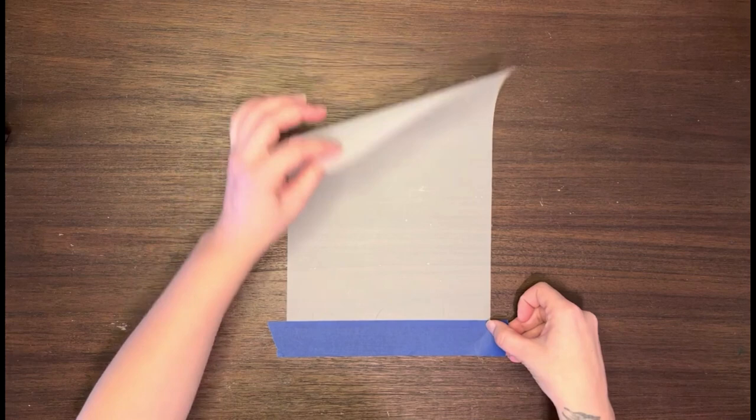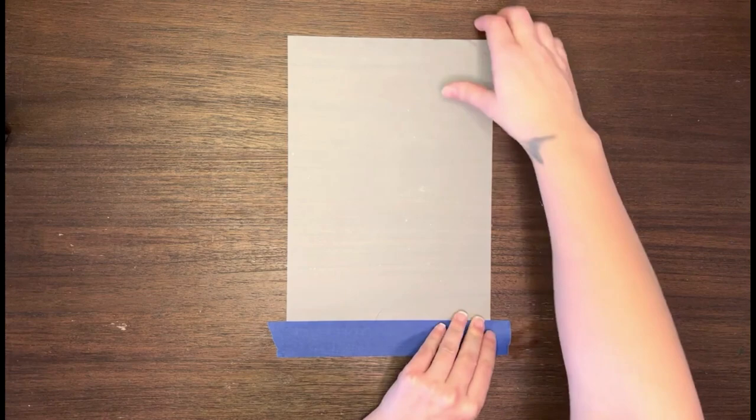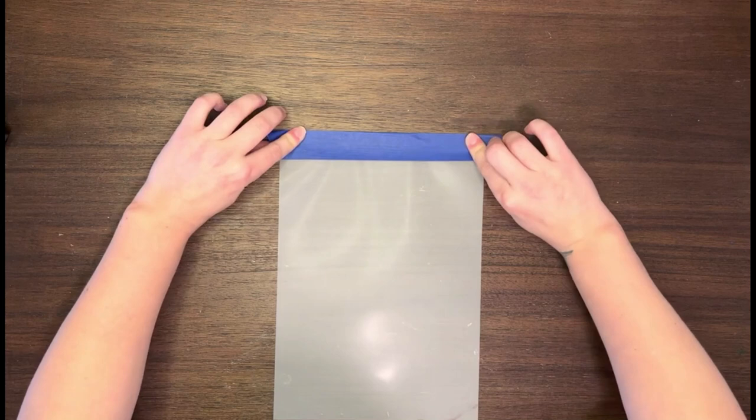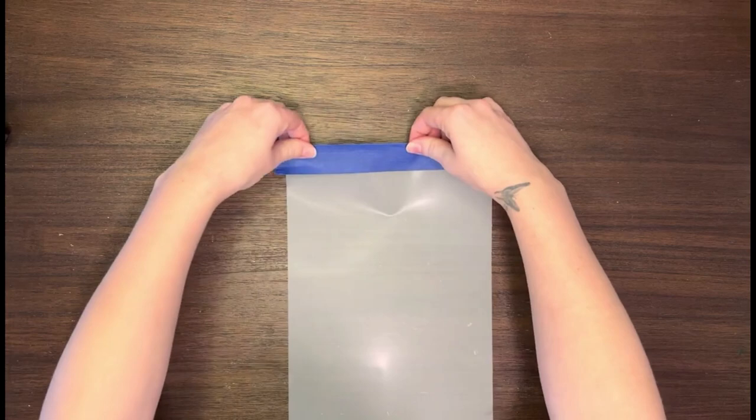And you just really make it nice and smooth and then also make sure you're taping on the right side that you're supposed to be printing on. The shiny side is always down or on the back side. So once that's on there just go ahead and take it up and then you're just going to really gently fold it over.